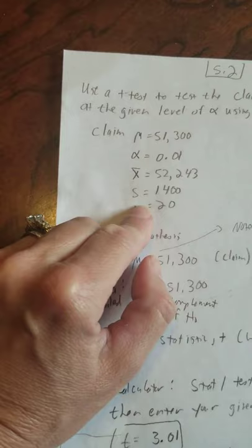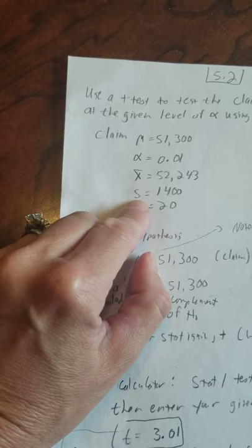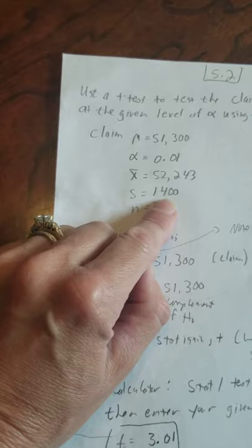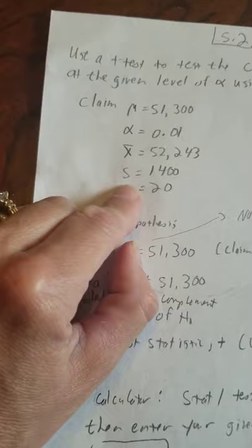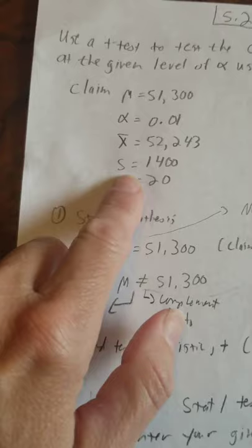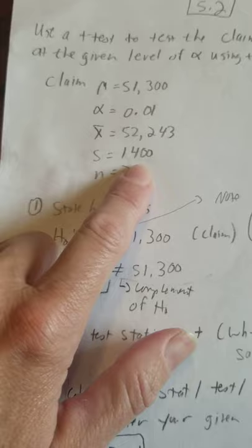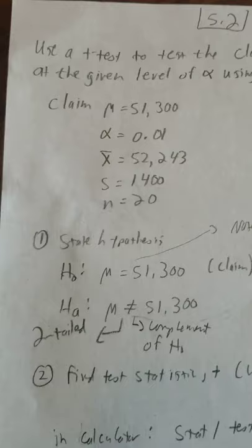Be careful, because on the test, they will not necessarily tell you, use a t-test or a z-test. You'll have to know, were you given the standard deviation from a sample or a population? If they give you the symbol, super easy. If they give you the words, not so easy. You have to look for the word sample to signify t-test. In this problem, they give us S, which is clearly the symbol for a sample standard deviation. So we know we're going to do a t-test.